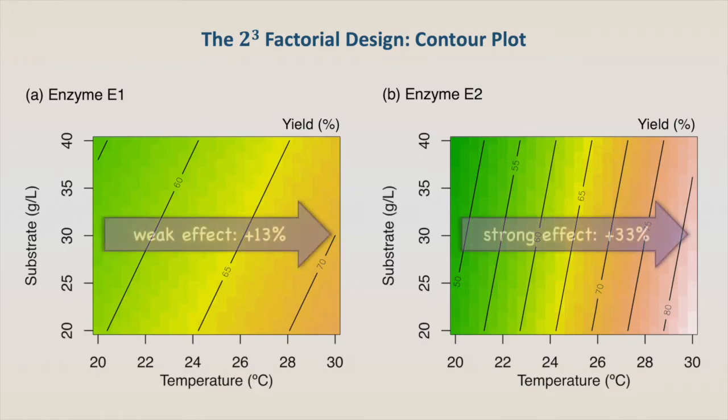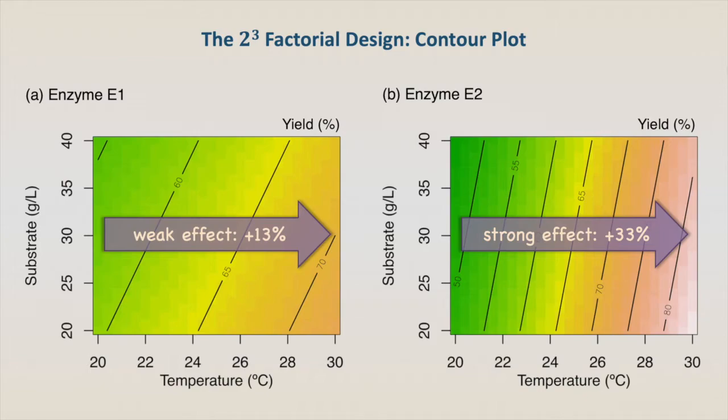For enzyme E1, increasing the temperature from 20 to 30 degrees increases the yield by about 13%. While for enzyme E2,